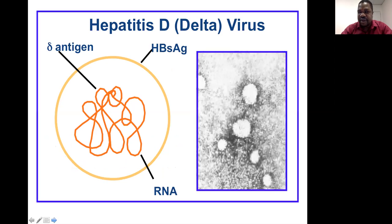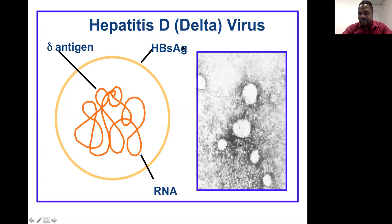This is the structure of hepatitis D virus. It is an RNA virus, and it has an S antigen just like hepatitis B, and a delta antigen.